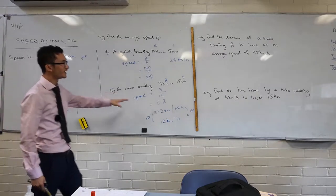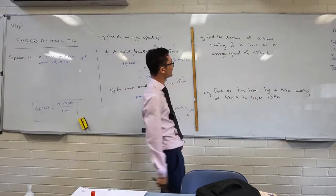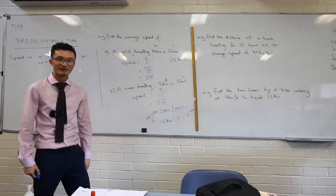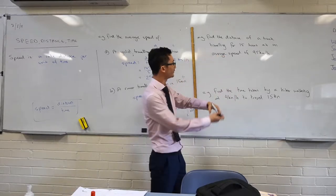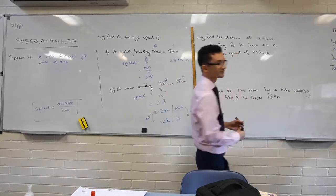In order to find out, for example in this one here, we want to find the distance of a truck traveling for 15 hours at an average speed of 95 kilometers. Before I go on to solving this one, we're looking at an average speed.